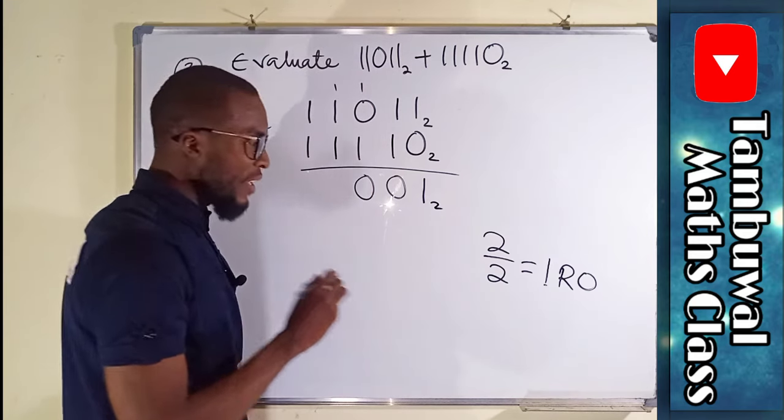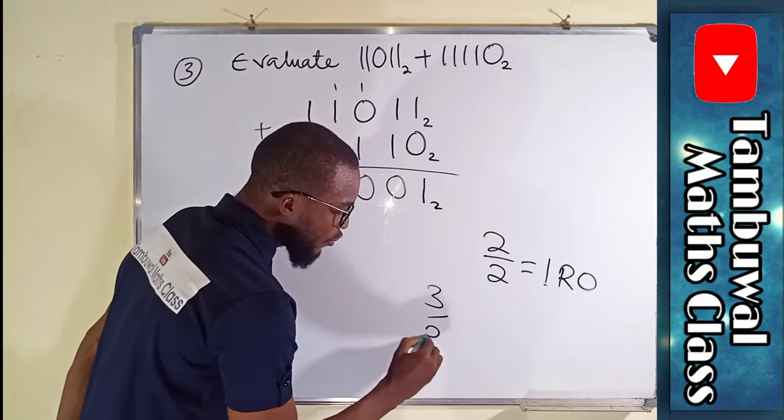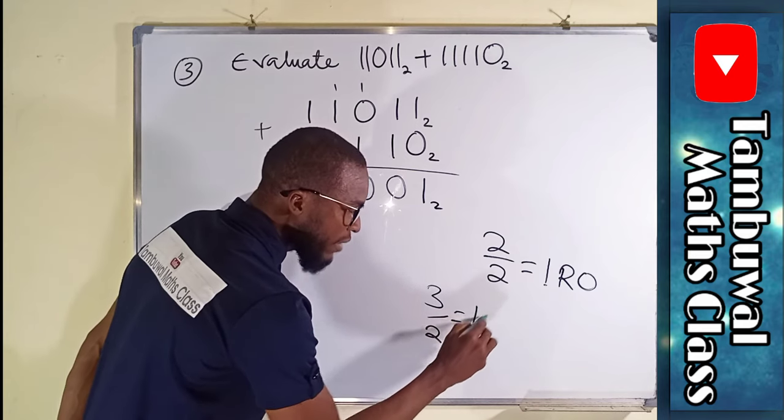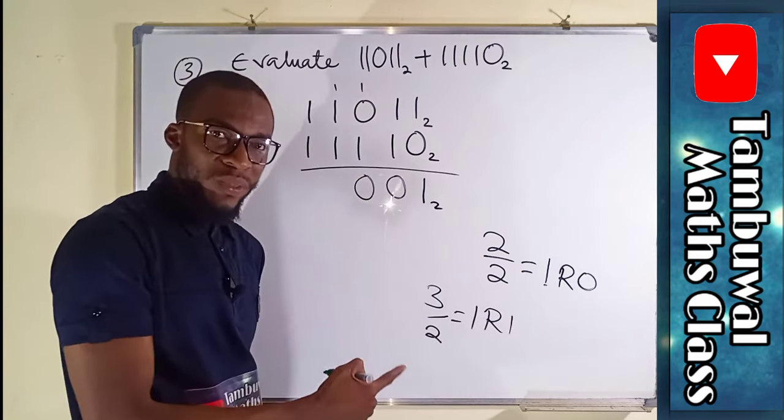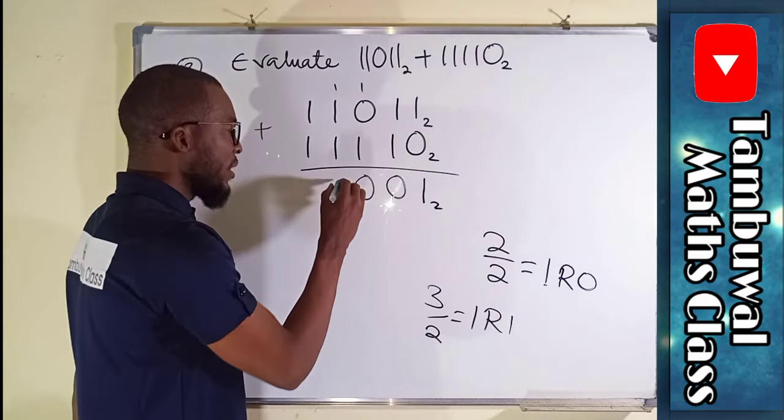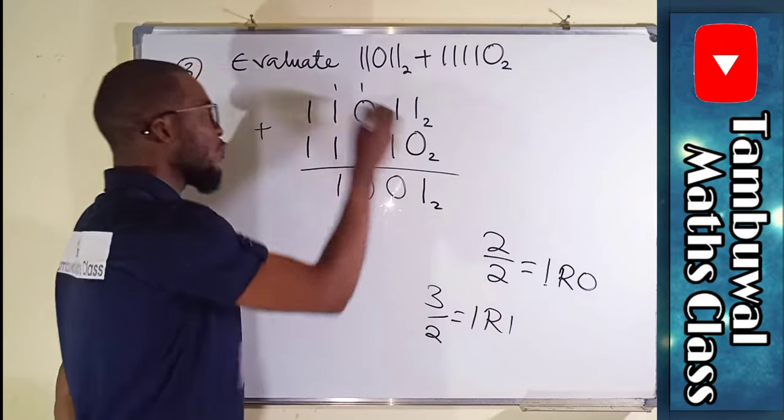One, two, three. Now we have three. Three divided by two is equal to one remainder one. Because two can go into three one time remainder one. Write down the remainder. Take that one to the next.